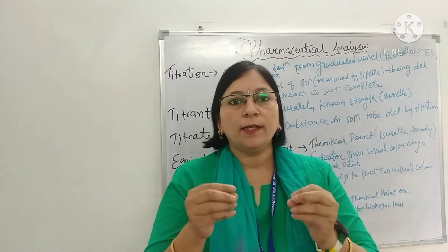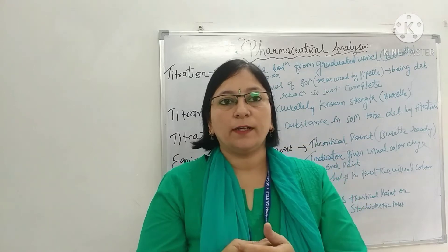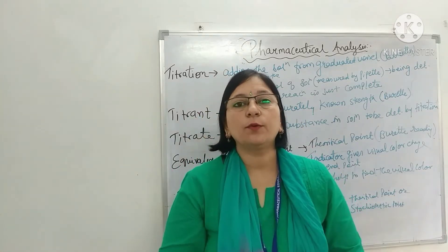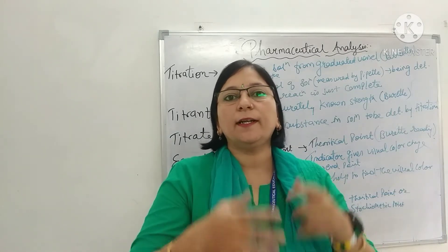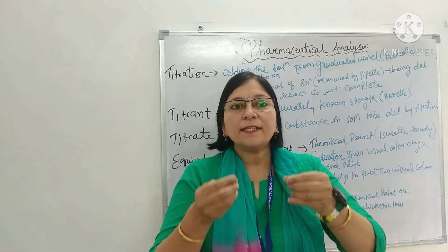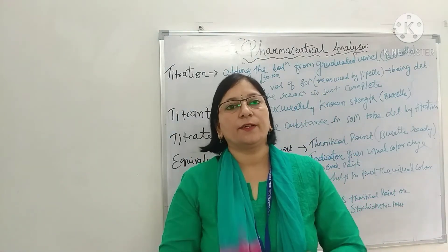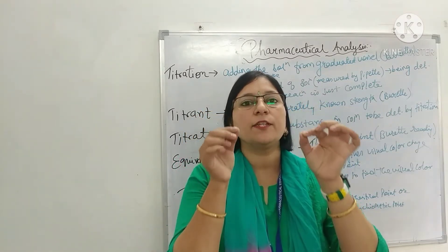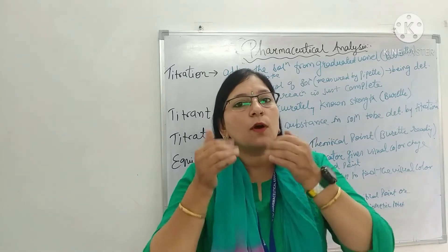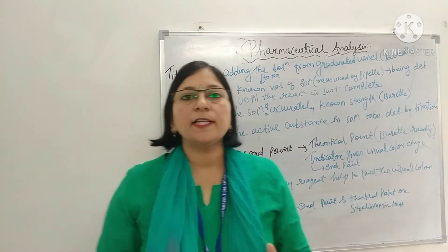Now, equivalence point and end point. जो burette reading है at which the reaction is just complete in a titration — उसको हम equivalence point, stoichiometric end point, और theoretical end point कहते हैं। The visual color change is slightly higher than the equivalence point and is called the end point of the titration. जब हम indicator use करते हैं तो वो हमको visual color change देता है, पर वो थोड़ा सा higher होता है than the equivalence point — उसको हम end point of the titration कहते हैं।